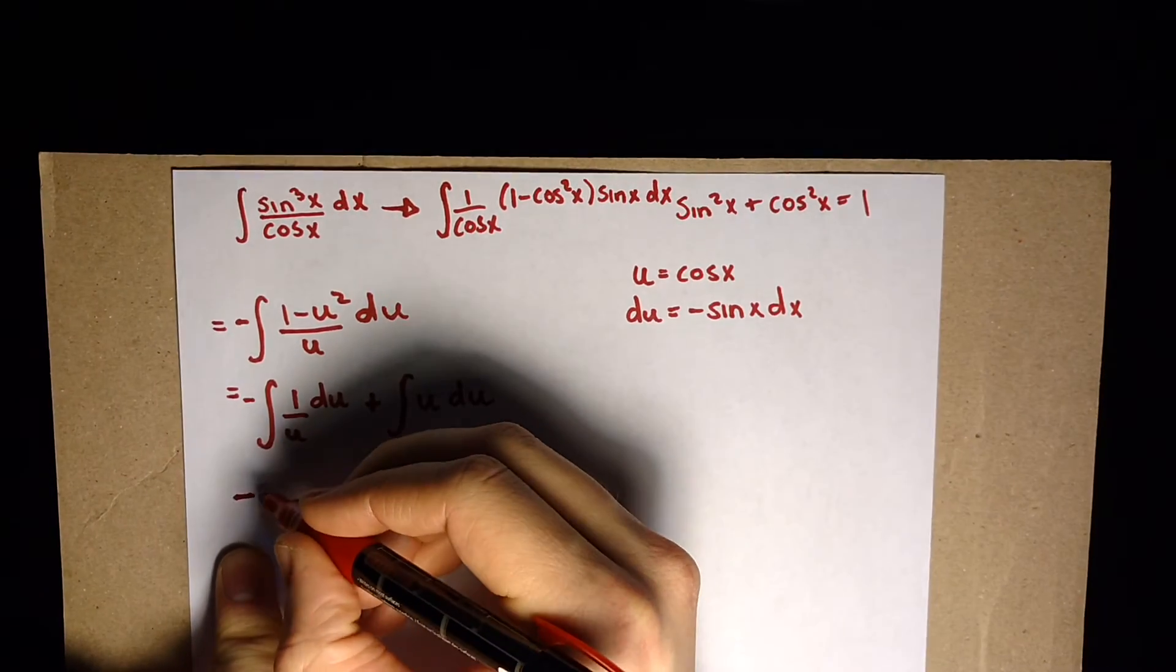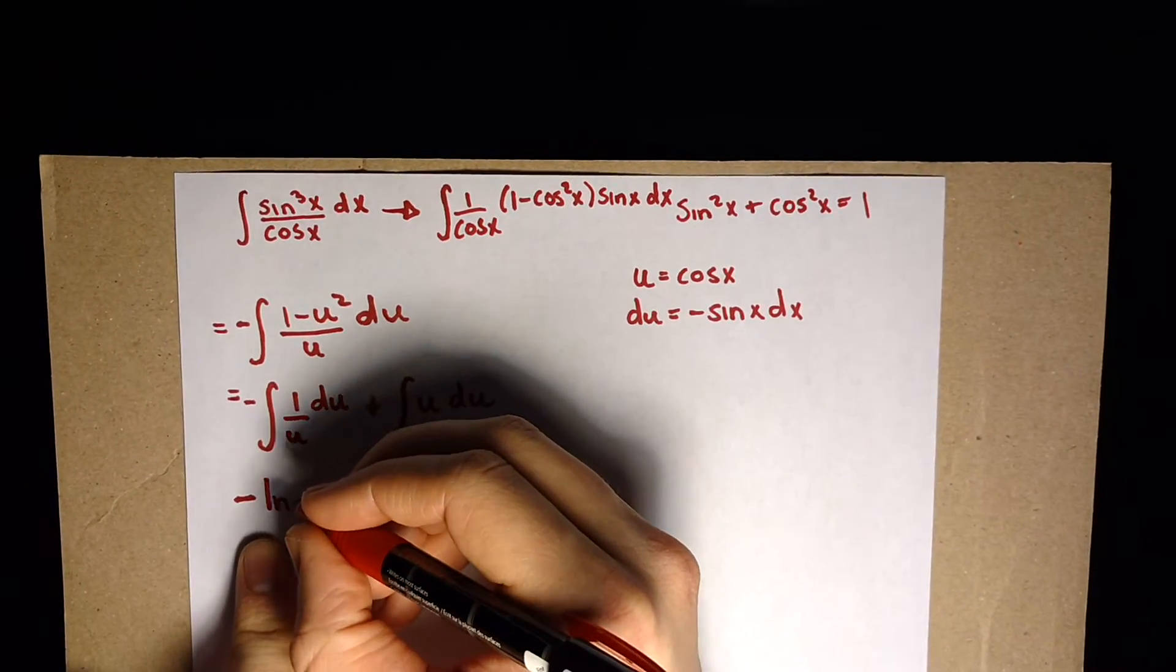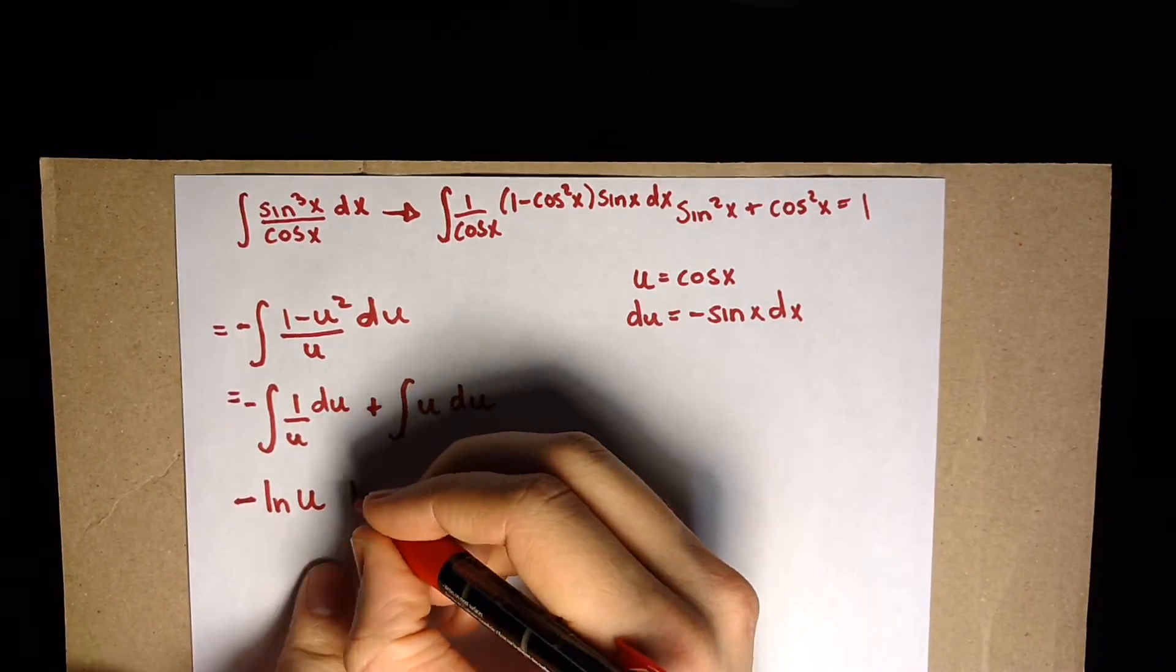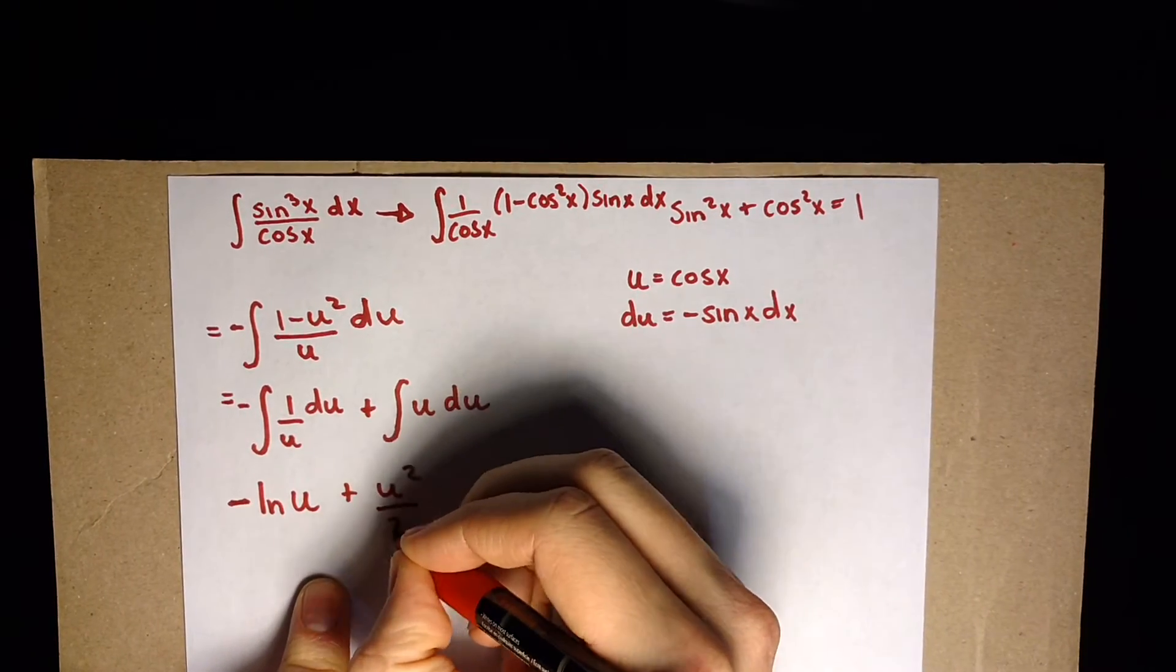So over here we've got negative ln u plus u squared over 2 plus c.